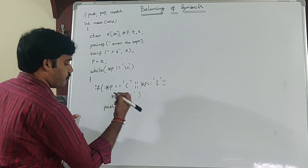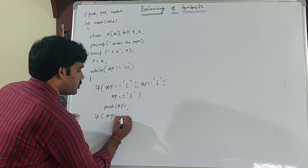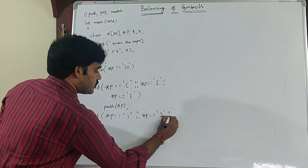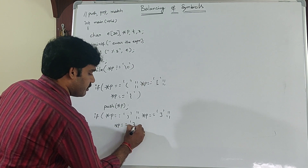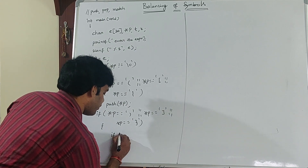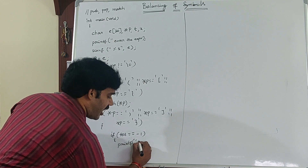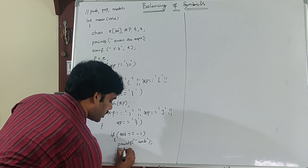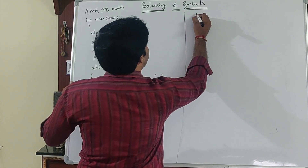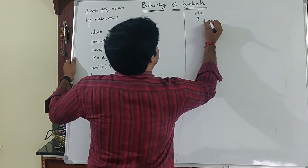Next, if *p is a closing symbol — ')' or ']' or '}' — first check whether the stack is empty. If TOS == -1, the stack is empty, so printf "unbalanced" and return, since there's no need to check remaining symbols. If the stack is not empty, go to the else block and pop an element from the stack: t = pop().